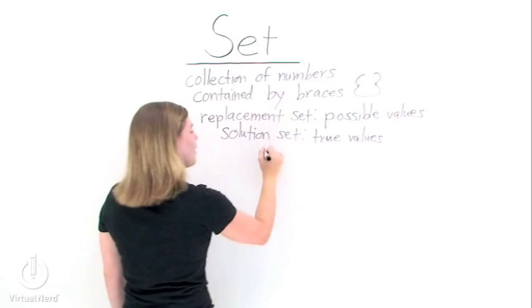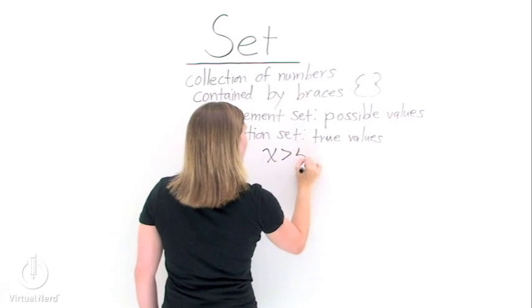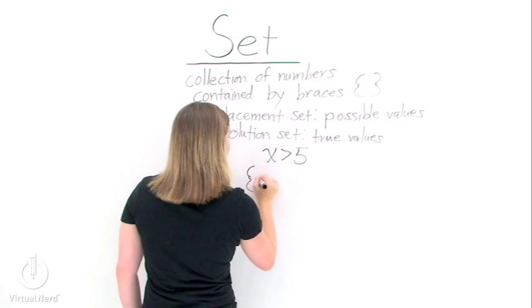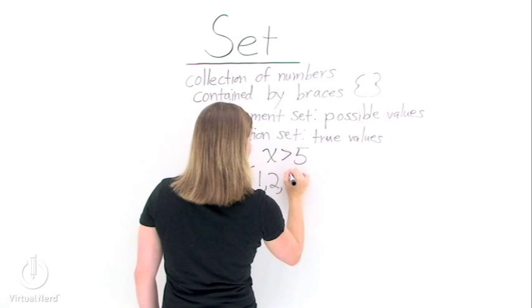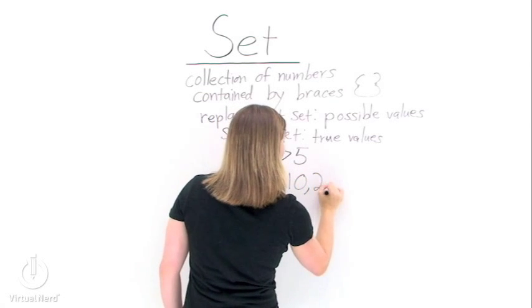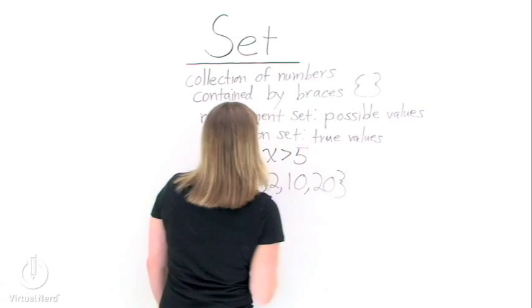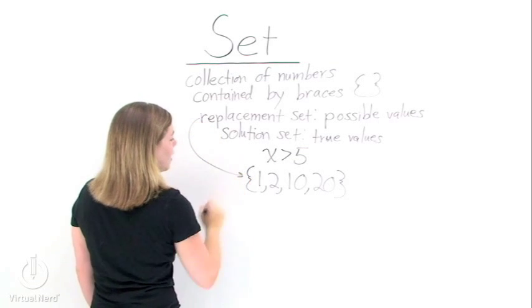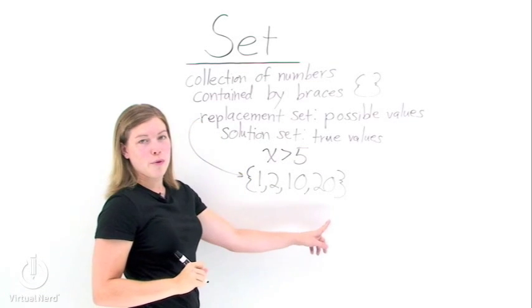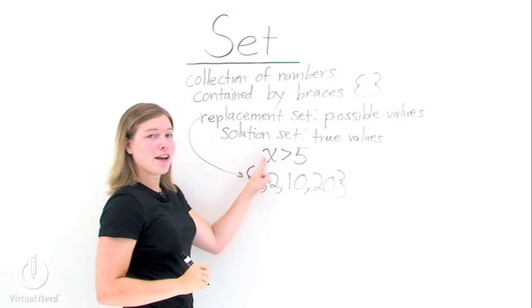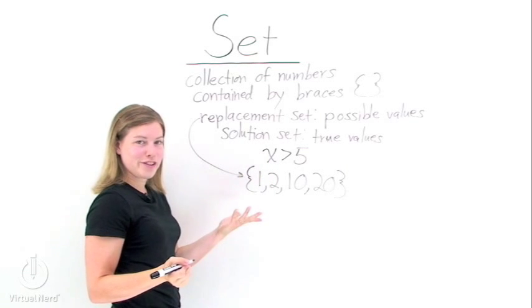Let's look at an example. X is greater than 5. Let's say we're given the replacement set 1, 2, 10, and 20. What we need to do to find our solution set is to take each value in the replacement set, plug it in for x, and pick out the ones that make a true statement.